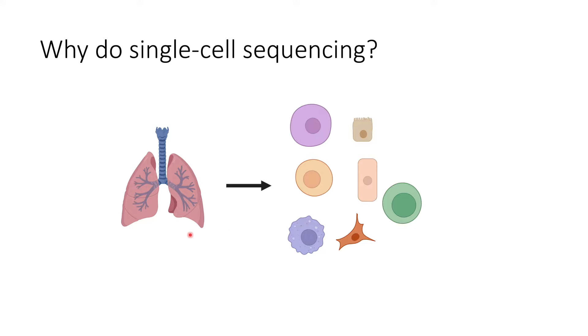For example, here I'm just showing the lung, but even within a small subsection of the lung, you would have multiple different cell types. So if you did just bulk RNA-seq, you wouldn't be able to differentiate the transcriptional changes between individual cell types. So obviously you want to do single-cell sequencing on an in vitro culture that only contained one cell type.